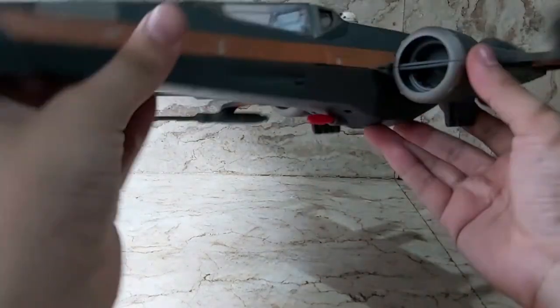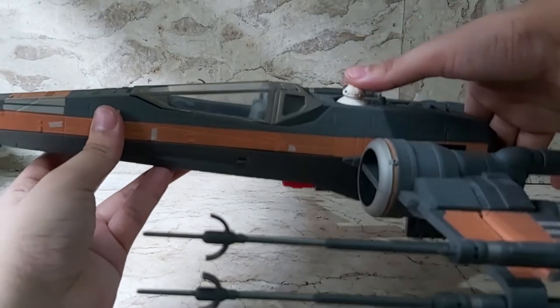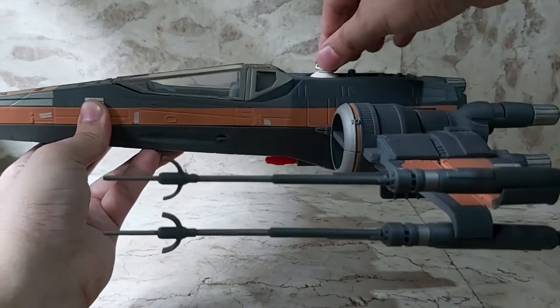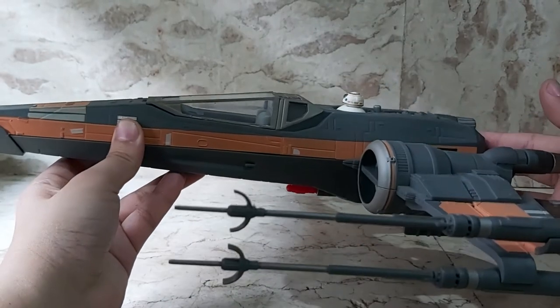He has a gimmick which I'll show you more of, but here's a quick glimpse. Press that, that opens. Pull this back, wings close. BB-8 is permanently connected to the ship. He is pretty much a button for the gimmick.